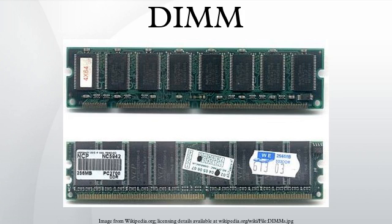DIMMs are often referred to as single-sided or double-sided to describe whether the DRAM chips are located on one or both sides of the module's printed circuit board. However, these terms may cause confusion, as the physical layout of the chips does not necessarily relate to how they are logically organized or accessed. JEDEC decided that the terms dual-sided, double-sided, or dual-banked were not correct when applied to registered DIMMs.